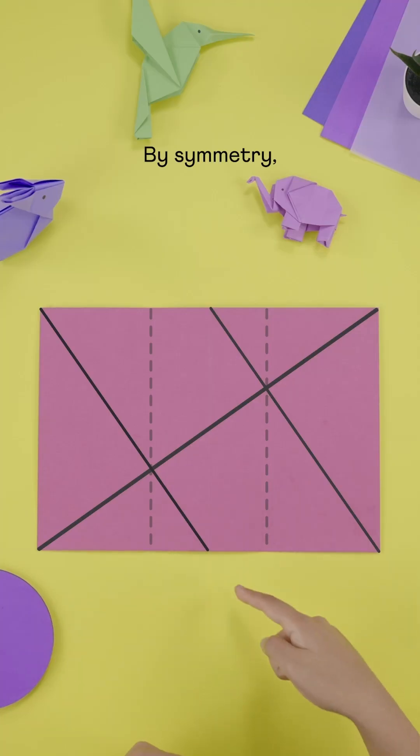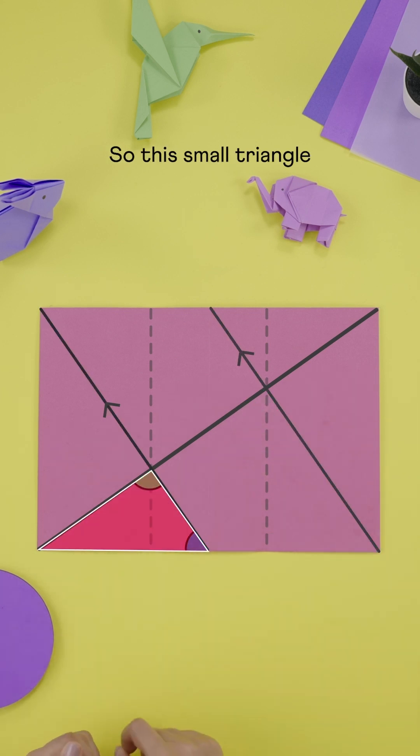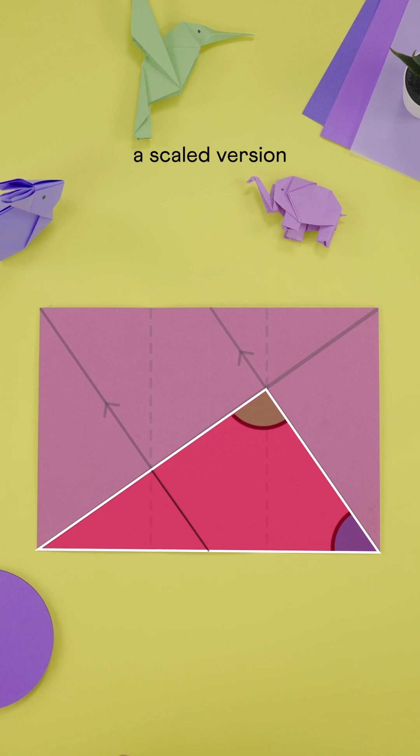But why does that work? By symmetry, these two lines must be parallel, making these equal angles. So this small triangle is just a scaled version of this one.